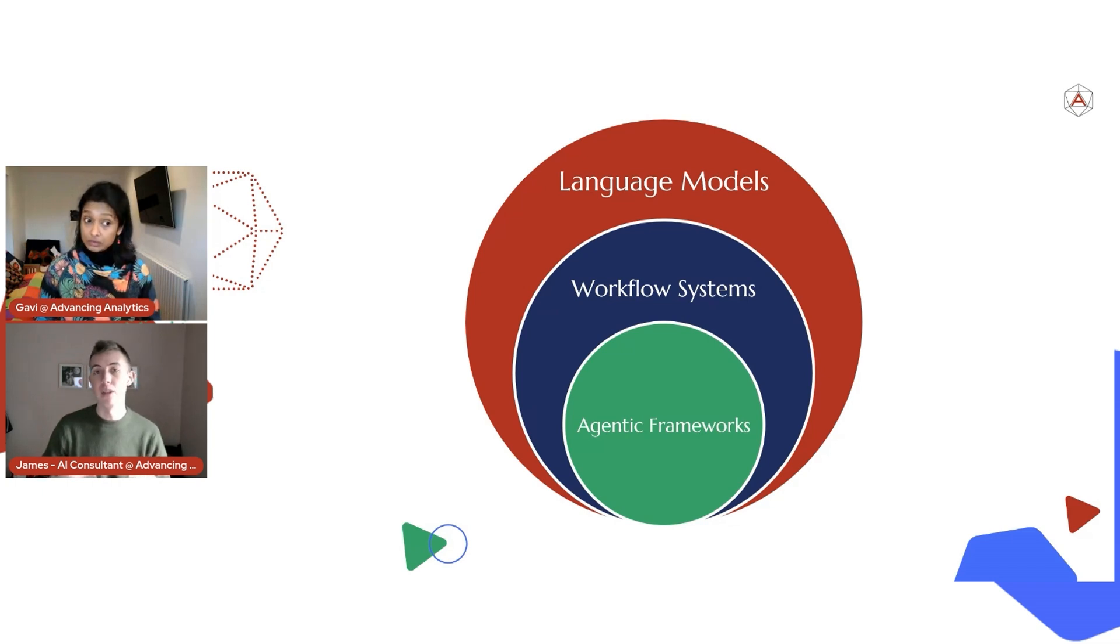But then we start getting down to agentic systems, agents, agentic frameworks. We'll get to that in a minute. But that's when you start seeing, yes, these sort of workflow style systems, enriching things using RAG, having different steps in your process. But the agents can then decide which ones they want to do in what order. Maybe some not at all. Maybe some several times. And it starts getting a lot more dynamic as a whole system. That makes sense.